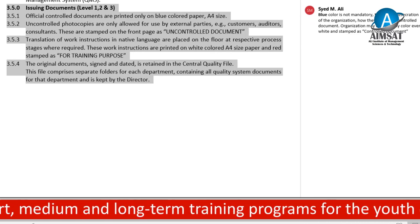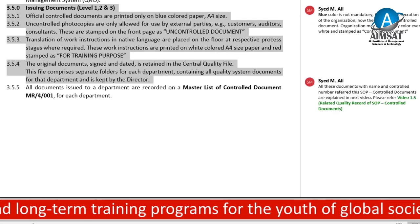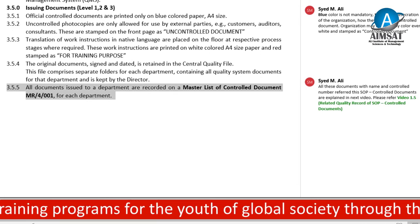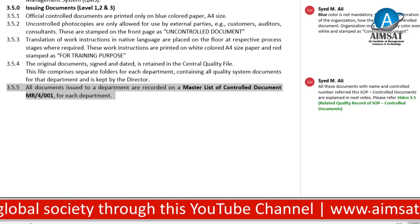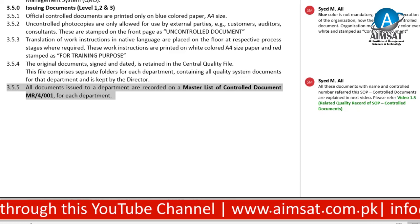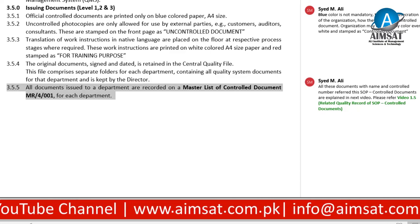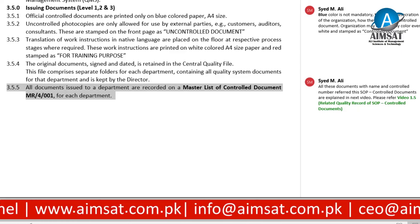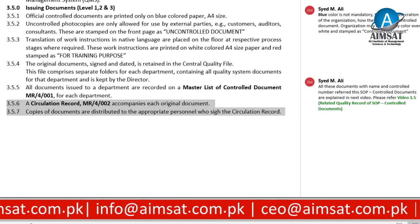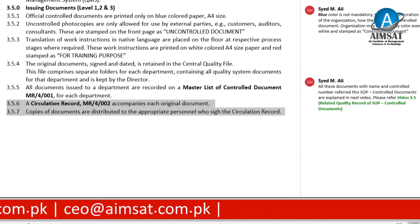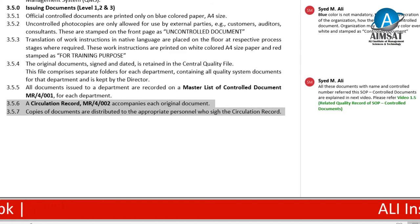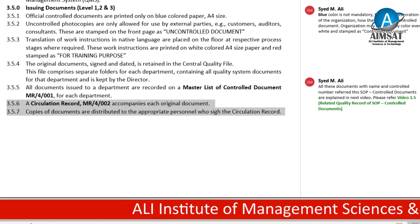Official controlled documents are printed only on blue colored A4 size paper. Uncontrolled photocopies are only allowed for use by external parties — for example, customers, auditors, and consultants — and are stamped on the front page as 'uncontrolled document.' Translations of work sections in native languages are placed on the floor at respective workstations where required, printed on white colored A4 size paper and red-stamped as 'for training purpose.'